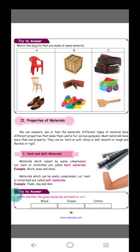First, hard or soft materials. Hard materials are those which cannot be easily compressed, cut, bent, or scratched. Examples of hard materials are brick, stone, and steel.